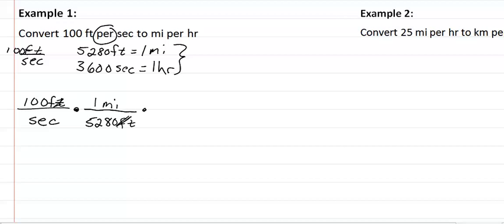And then we are going to look at our second conversion. We have seconds in the bottom, so we want seconds up top here. And we put one hour in the denominator. Seconds over seconds is one, so the only thing we are left is miles per hour, which is the desired unit that we want. Everything in top is multiplied, so we have 100 times 3,600 divided by 5,280.